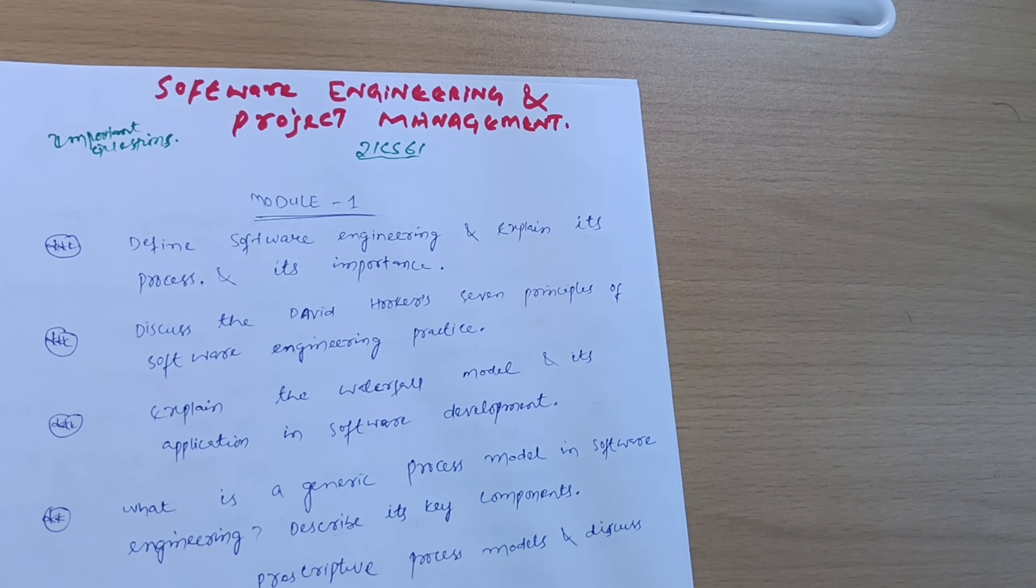If you know the genuine points, the right points, then try to write down the answer point-wise. That will be better. If somebody doesn't know the exact theoretical answer for a particular question, then there is a need of filling the paper as much as possible. I hope you're getting my point.